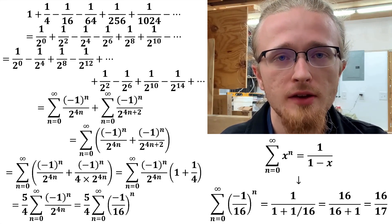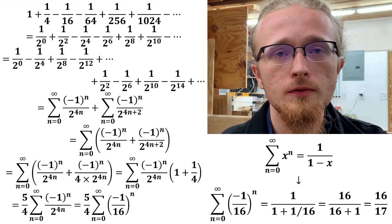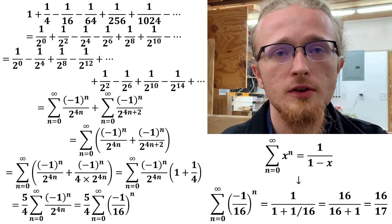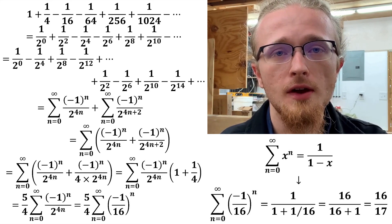Remember that a geometric series says that the sum of x to the n from n equals 0 to infinity equals 1 over 1 minus x. From this, we can see that the sum from n equals 0 to infinity of negative 1 over 16 to the nth power must just equal 16 over 17.